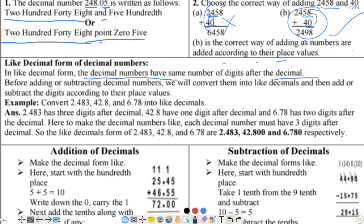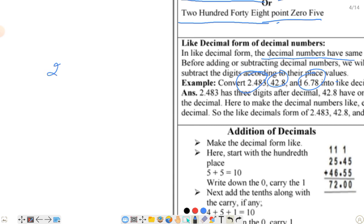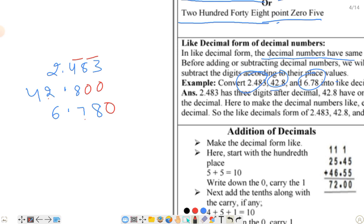जैसे आपको तीन संख्याएं दी हुई हैं - 2.483, अगला है 42.08, और एक और संख्या। तो decimal के सामने decimal लिखें। सबसे highest 3 digit है decimal के बाद, तो बाकी में 0 डाल दिए। 2 digit वाले में एक 0 डाल दिया, decimal के पहले भी देखें जहाँ जरूरी हो 0 डाल दिए। यानि सभी में एक जैसे place value के according digit हो गए, अब जोड़ना आसान होगा।